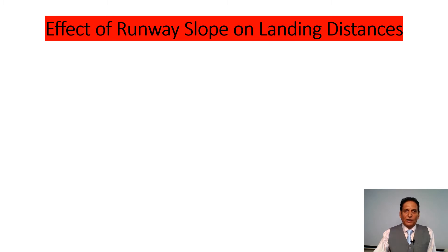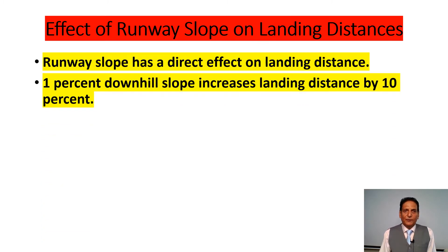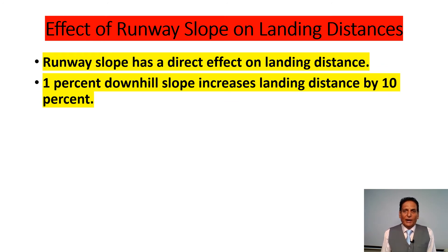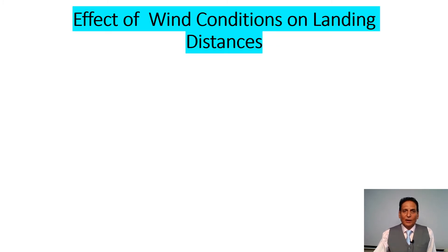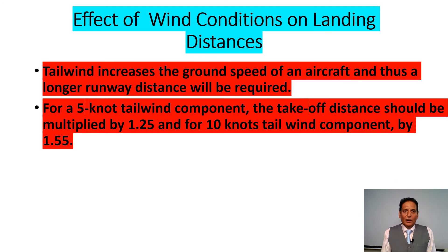The effect of runway slope on landing distances: runway slope has a direct effect on landing distance. A 1% downhill slope increases landing distance by 10%. Regarding wind conditions, tailwind increases the ground speed of an aircraft and thus a longer runway distance is required. For a 5-knot tailwind component, the landing distance should be multiplied by 1.25, and for a 10-knot tailwind component, by 1.5.